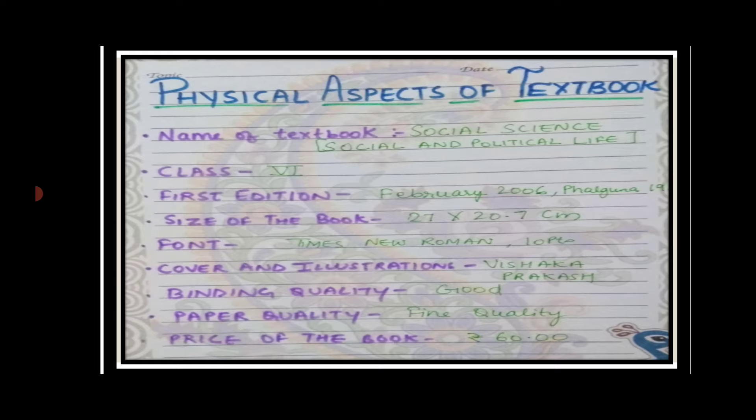Then come the physical aspects of the textbook. Physical aspects include the name of the textbook, class, first edition, size of the book, font, cover and illustration, binding quality, paper quality, and price of the book. These are the physical or external aspects of a textbook.